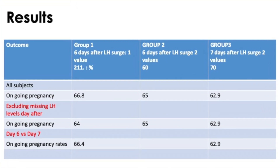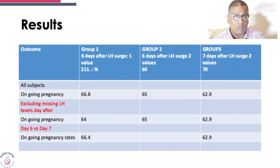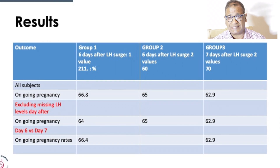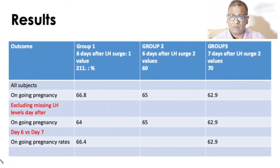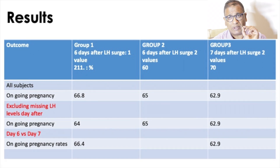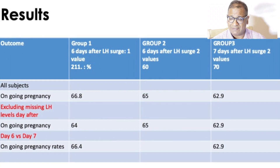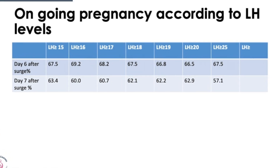The results were quite fascinating. Across groups one, two and three, the pregnancy rates and ongoing pregnancy rates were very much the same — ongoing pregnancy rates were almost between 62 and 64 percent, which is absolutely fabulous. There was no drop in pregnancy rates whether you did a day six or day seven transfer. When looking at LH levels, in any LH greater than 15, the pregnancy rates remained steady between day six and day seven embryo transfers, again showing no significant difference.